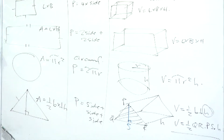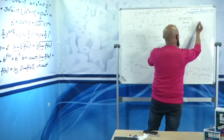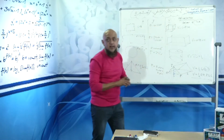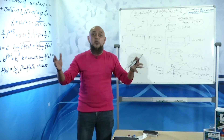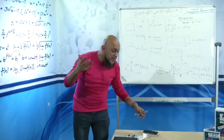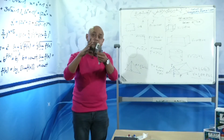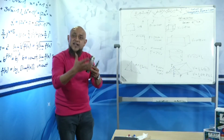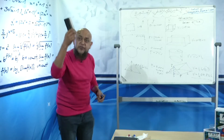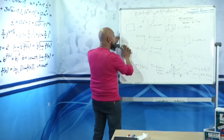That was your area, perimeter, and volume. We're now going to go on to total surface area. Total surface area means exactly what it says — how much paint is required? So if I take this duster, how much paint is required to paint this eraser or duster? That is called total surface area — the outside area, how much material is required to manufacture this.